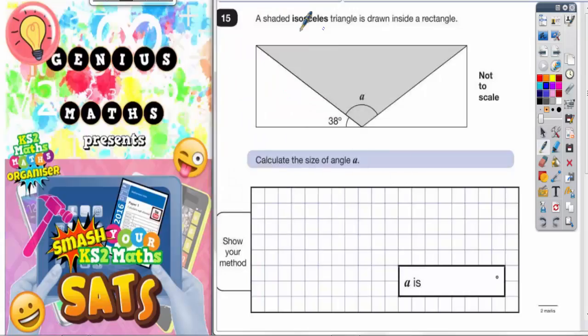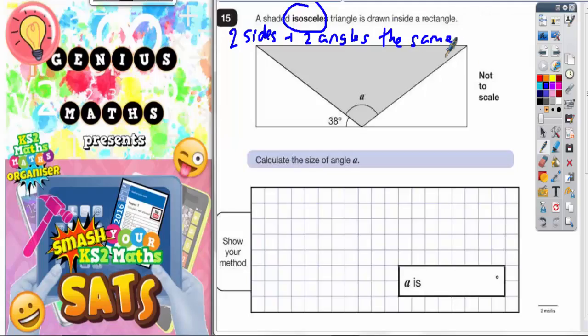Question 15. A shaded isosceles triangle is drawn inside a rectangle. Remember, isosceles means the triangle has two sides and two angles the same, and it has one line of symmetry.